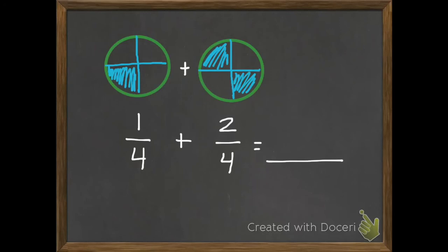So once again, we just add our numerators. So we have one plus two more. So one, two, three. So our answer is three. And these are fourths. So three fourths is our answer.